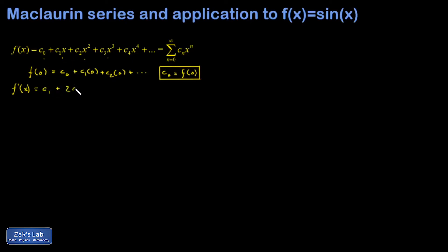And then I get a 2c2x, a 3c3x squared, a 4c4x cubed, and so on. Now it looks like I can pick off c1 by plugging in x equals 0. So f prime of 0 is going to be c1 plus a bunch of terms that vanish. And I find c1.